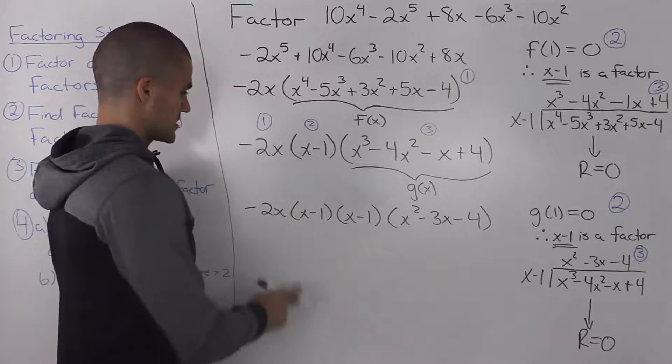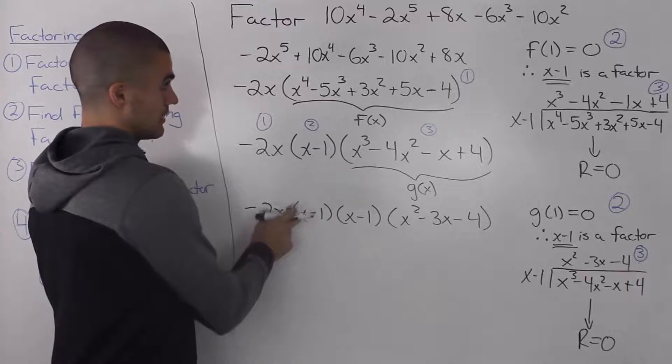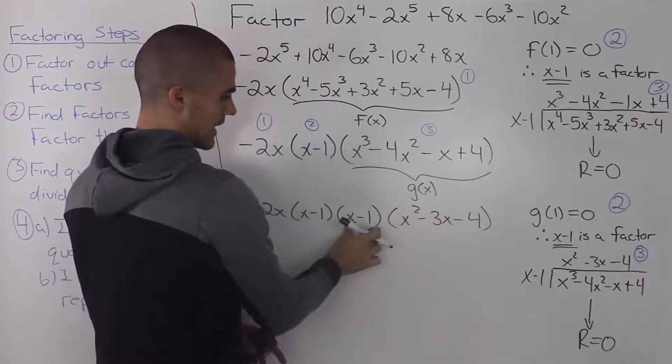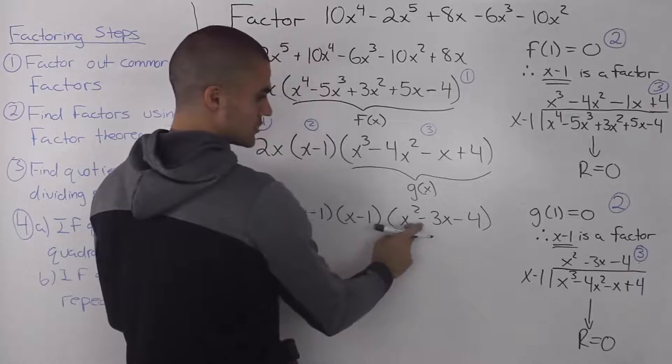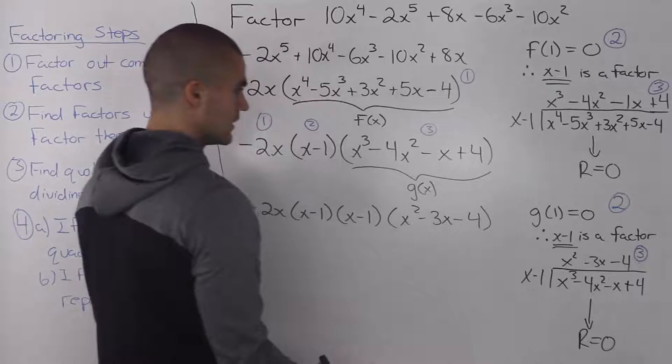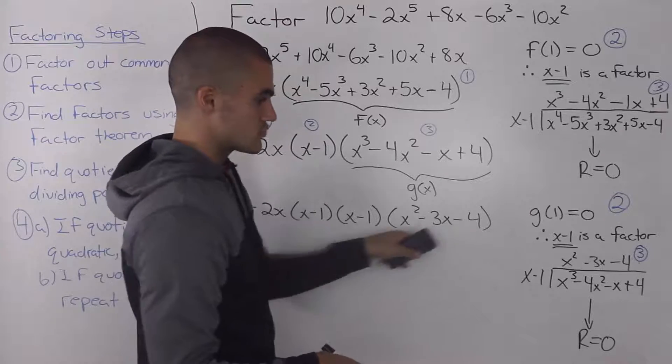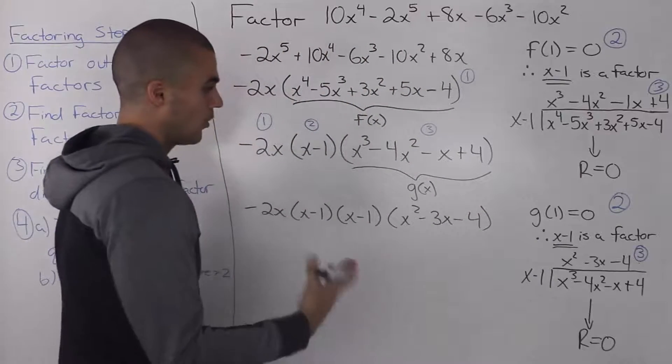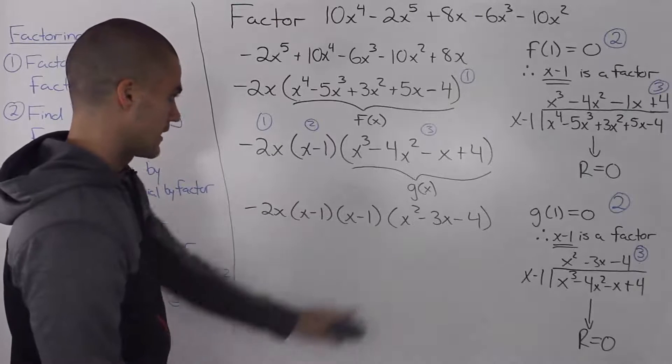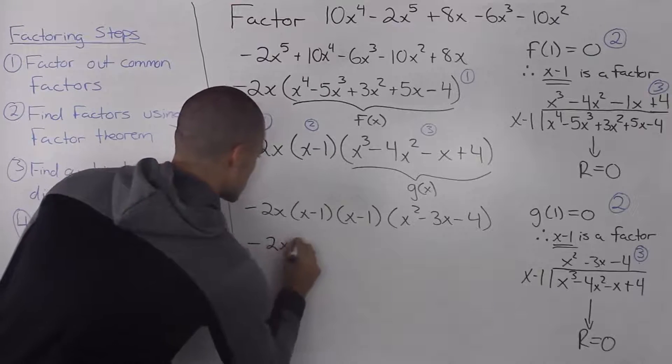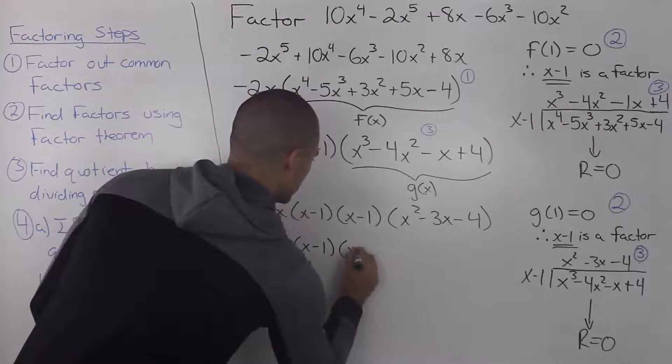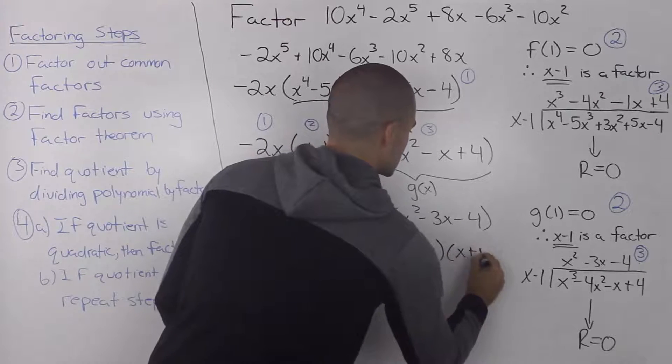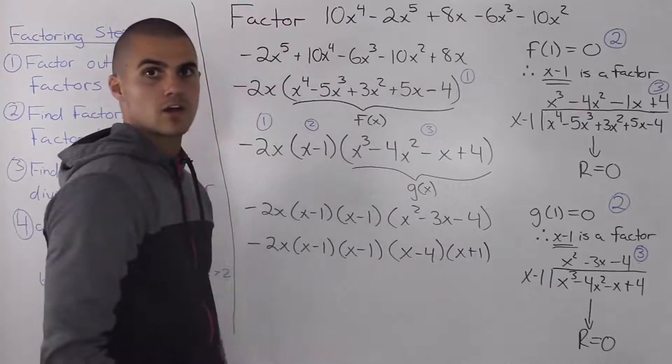So continuing our factoring process, we had the negative 2x initially, then we factored out an x minus 1, and then we took this polynomial g of x and factored it into x minus 1 again, and our remaining quotient of x squared minus 3x minus 4. So now we move on to step 4 with this remaining quotient here. And because it's a quadratic, we can just use the quadratic formula or decomposition if it factors smoothly, and in fact it does factor smoothly. So we would write out all of these factors again, and this factors into x minus 4 and x plus 1. Make sure that you are able to get this using decomposition factoring.